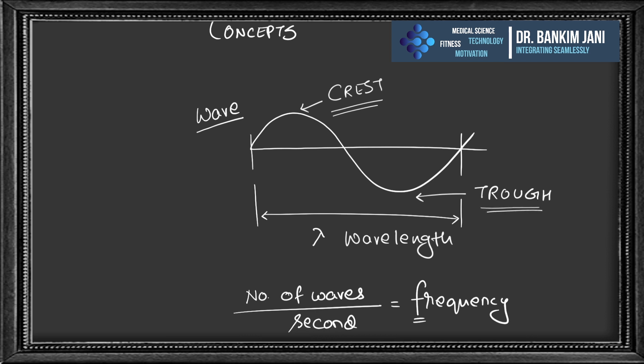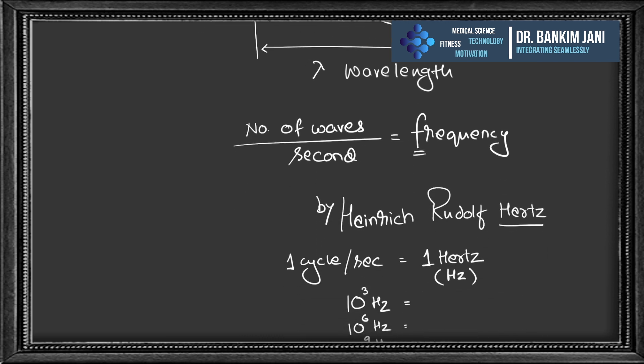A wave is comprised of many things. The entire length of the wave — from one point where it goes to the maximum, comes to baseline, goes to the deepest level, and then back to normal — is called the wavelength, represented by lambda. The number of such waves passing per second through a point is called frequency, meaning how many waves are going in one second.